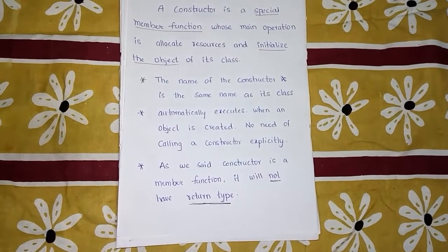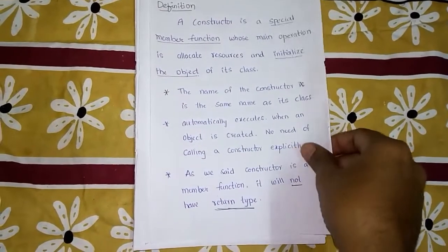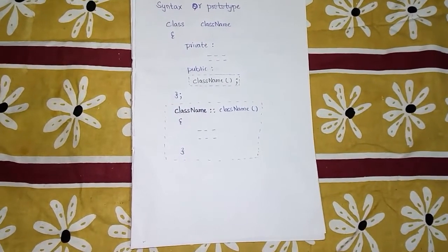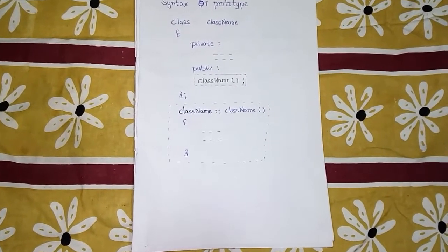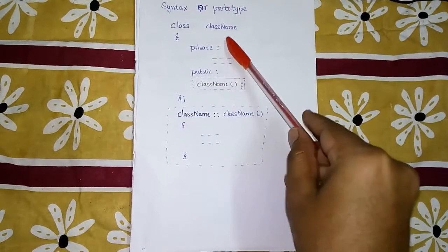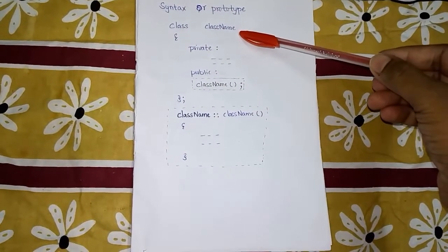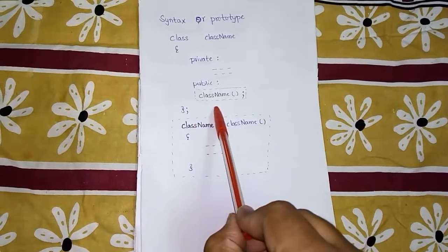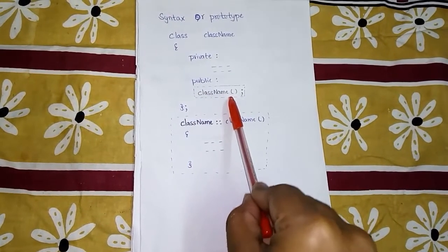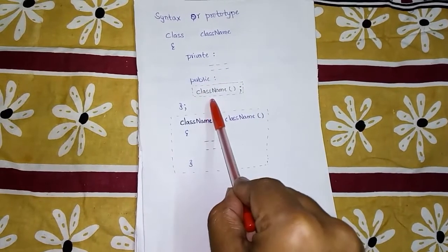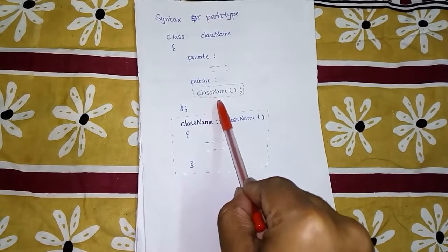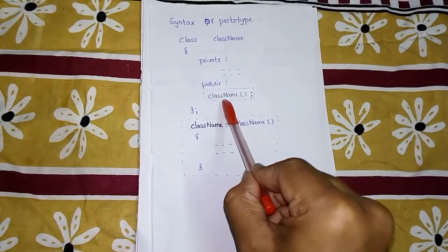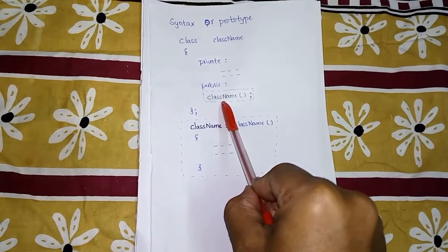As a member function, a constructor will not have a return type. Now let's look at the syntax or prototype of a constructor. A constructor has the same name as the class name. In this example, the class name is used as the constructor name, making it a special member function because its name is the same as the class name.